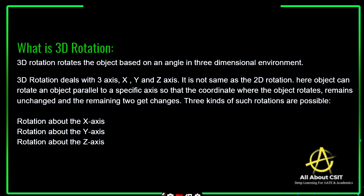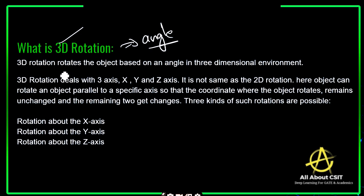Now let's see what exactly 3D rotation is. 3D rotation rotates an object by an angle in a three-dimensional environment. When we talk about rotation, we have to know the angle — how much the object is going to be rotated, whether clockwise or anti-clockwise. A 3D rotation deals with three axes because we are working in 3D, so we need to know the X, Y, and Z axes.